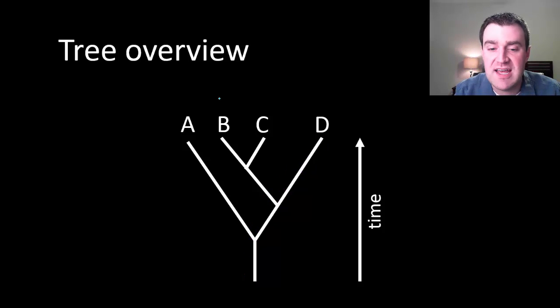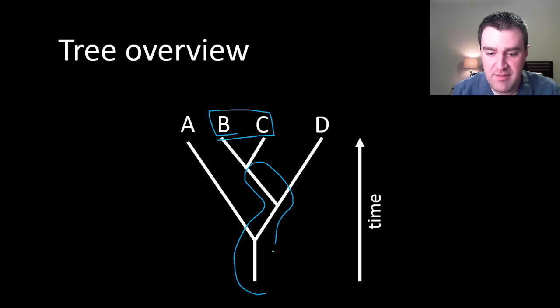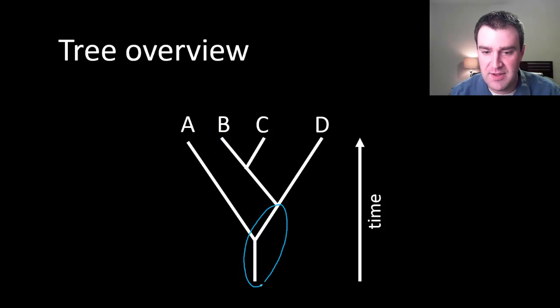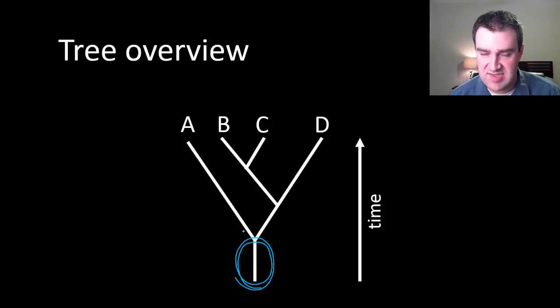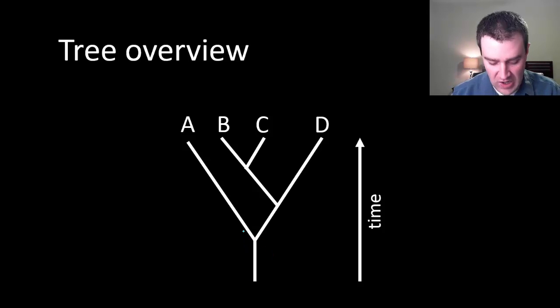That's useful because we can use these trees to figure out who's more closely related to who. B and C share all of this history right here, so they have the most in common. D has quite a bit in common as well - all of this history in common with B and C. But A is pretty distantly related because A only shares this much in common with B, C, and D.